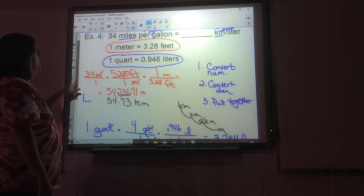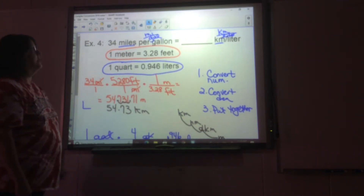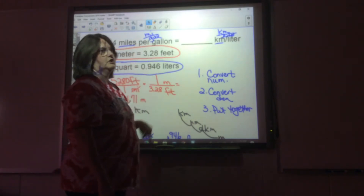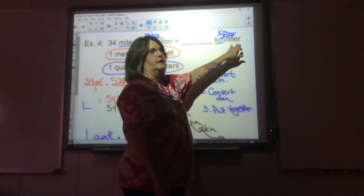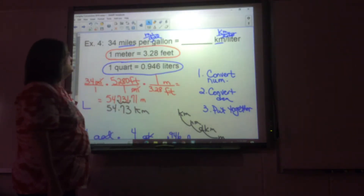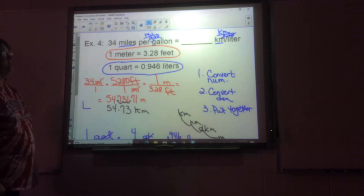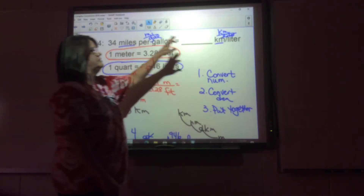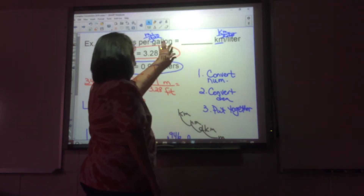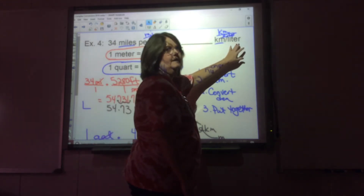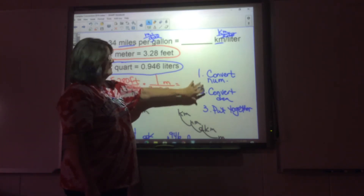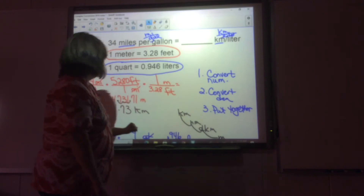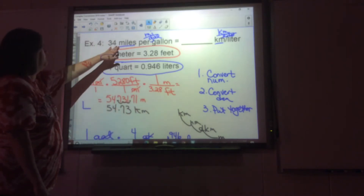This next one is a very difficult problem. You've got miles per gallon and you need to change that to kilometers per liter. What you have to do first is take your miles and change them to kilometers, then take gallons and change them to liters, and then put them together. The steps are: convert your numerator, convert your denominator, then combine them.